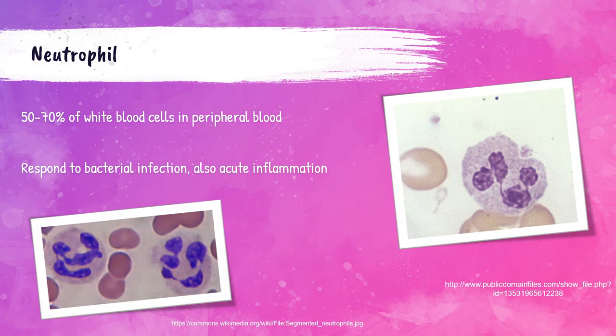The first leukocyte we're going to discuss is the neutrophil. This is the most prevalent of the leukocytes, accounting for around 50 to 70 percent of white blood cells in a normal adult's peripheral bloodstream. When an invader enters the body, neutrophils are one of the first to respond — they travel to the site of infection, destroy microorganisms by ingesting them and releasing enzymes that kill them. They are commonly associated with bacterial infections and acute inflammation.